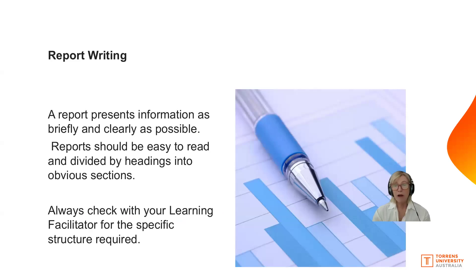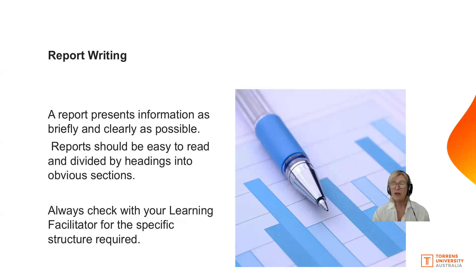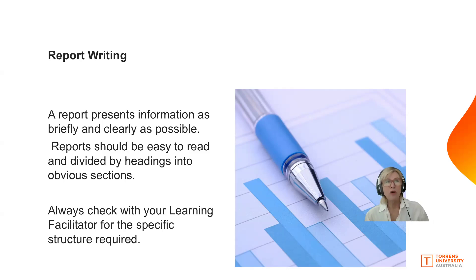The structure is clearly laid out in the assessment brief — stick to that structure. The word counts are suggested, so there's a bit of leeway around the 1,500 words and you can adjust how much you put in each section. Reports should be easy to read and in academic language, so avoid bullet points. Look at what a journal article looks like — they don't have bullet points.